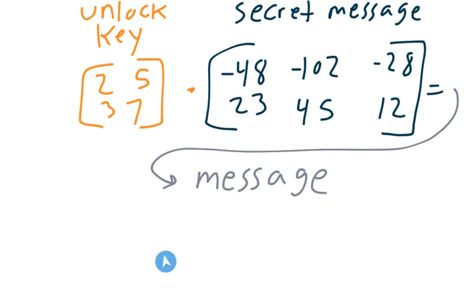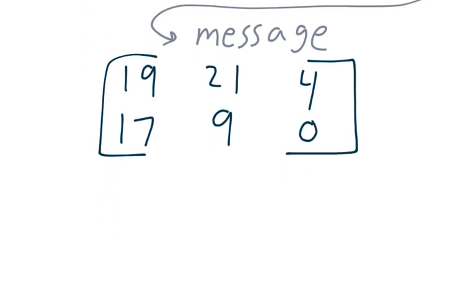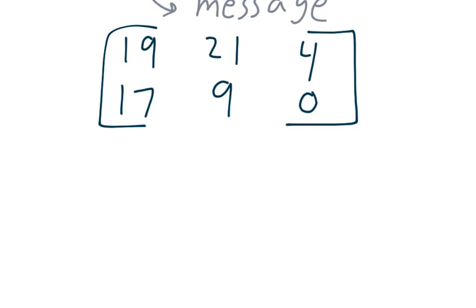This one you can do on your own, or just use your calculator, because these numbers are very big. But when you do this, though, here's what you get back as your answer. 19, 17, 21, 9, 4, and 0. So, the unlock key unlocks the secret message, gives you the actual message, and if you look at the alphabet, this stands for these letters. And the 0, it's just going to be a space, right? I just had to make it even, so I put a space there. So, that's the word squid.